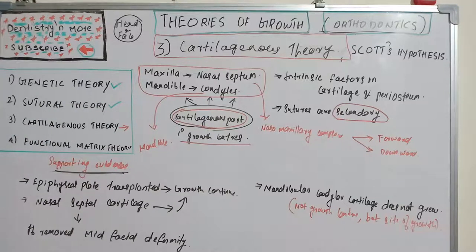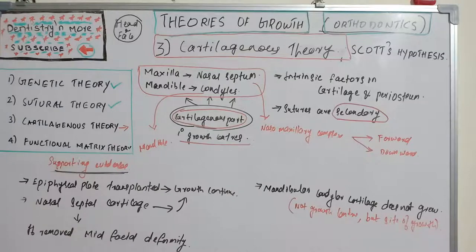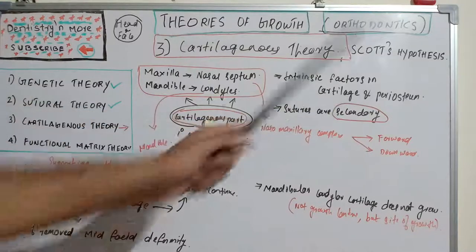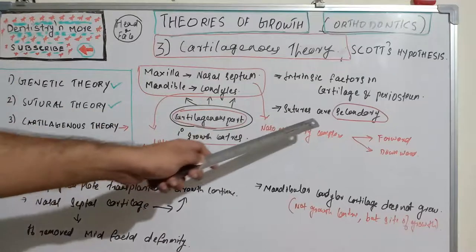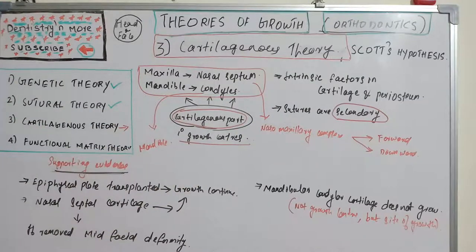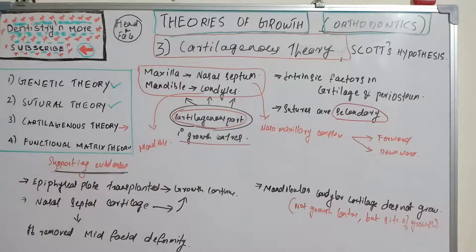In the maxilla, the cartilaginous part is the nasal septum or nasal septal cartilage, and in the mandible it is the condylar cartilage. These cartilages act as intrinsic factors in growth and development — these factors are present in cartilage and periosteum. The sutures act as secondary structures, responsive to synchondrosis proliferation and local environmental factors. Intrinsic growth-controlling factors are present in cartilage and periosteum, whereas sutures are secondary and dependent on extra-sutural influences.